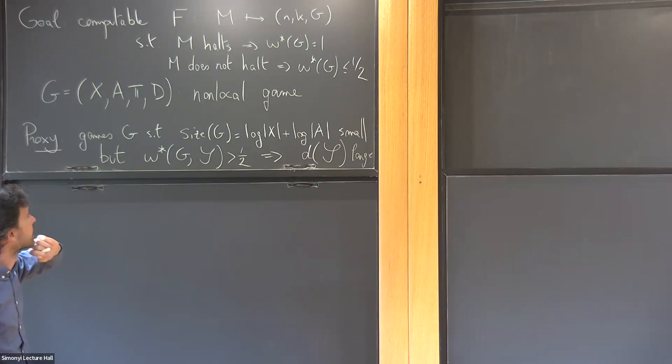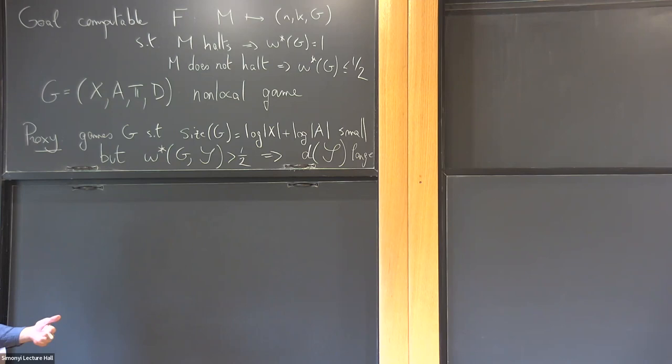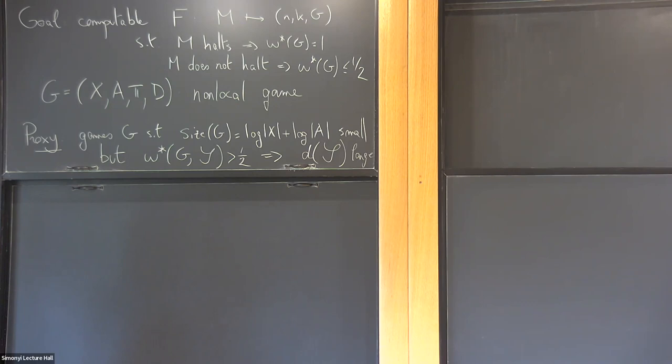So the Turing machine halts if and only if omega-star of the game should be one, and if it doesn't halt, omega-star should be less than half. Omega-star of the game is the supremum over all families of distributions in Q-star of the success probability in the game. I didn't put those definitions back on the board because they're less important for today.